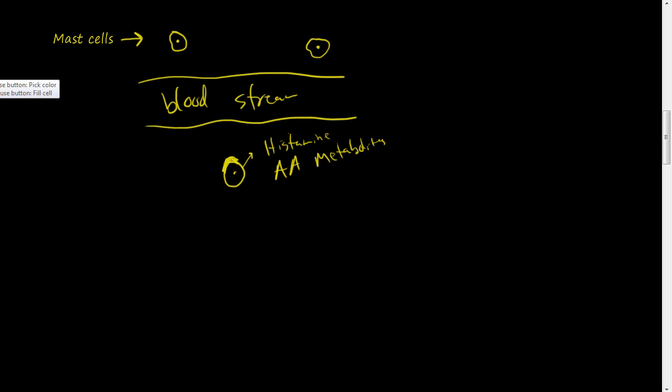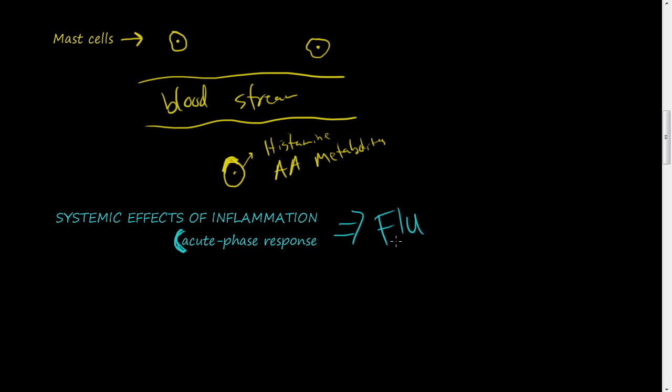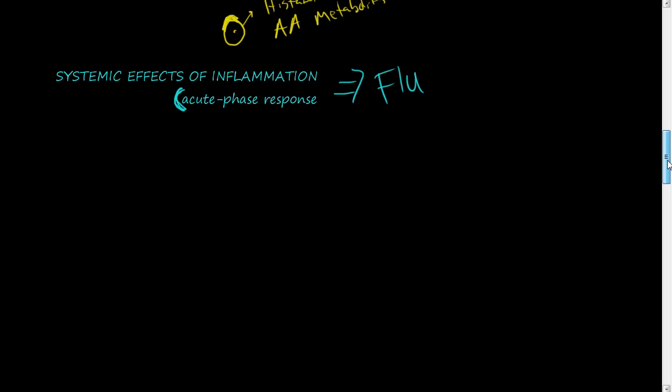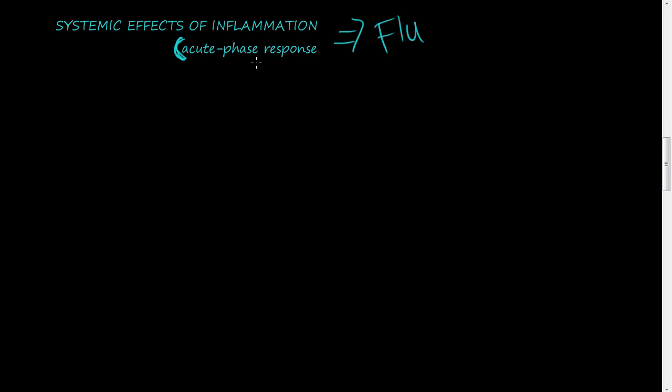And if the acute inflammation process doesn't take care of the problem, well, then it will just continue on releasing this stuff. And it will kind of convert to a more chronic inflammation process. So, next we're going to talk about the systemic effects of inflammation. So, the systemic effects of inflammation can be kind of classified as an acute phase response. And if you've ever had flu, influenza, then you've definitely felt the systemic effects of inflammation.